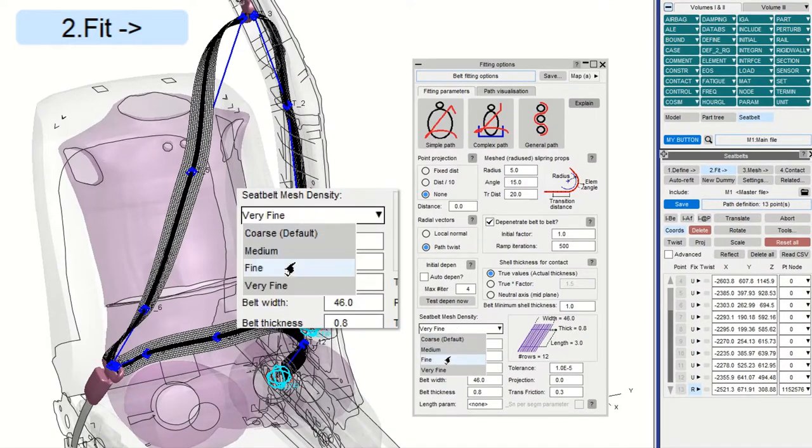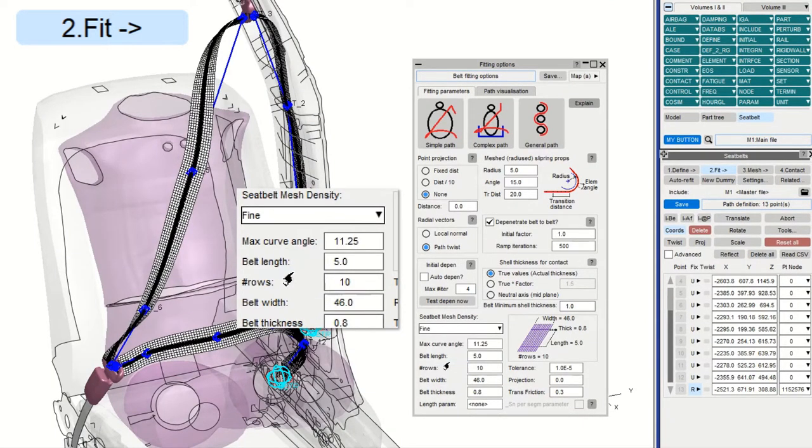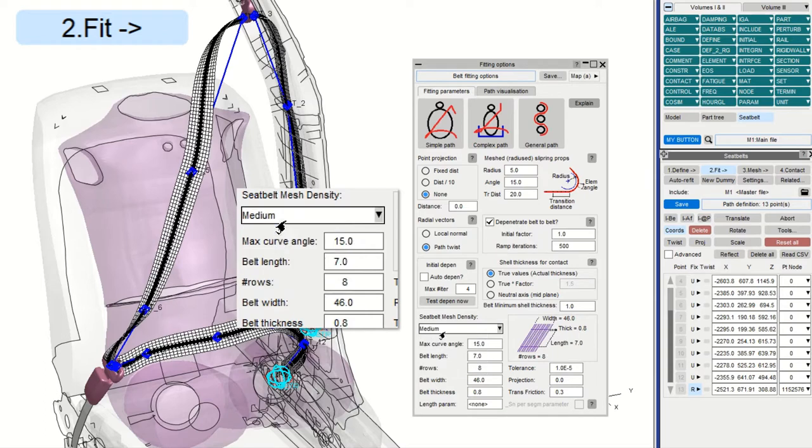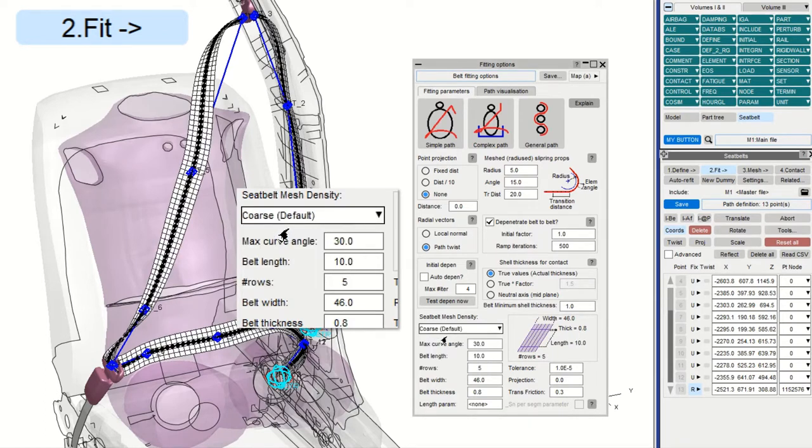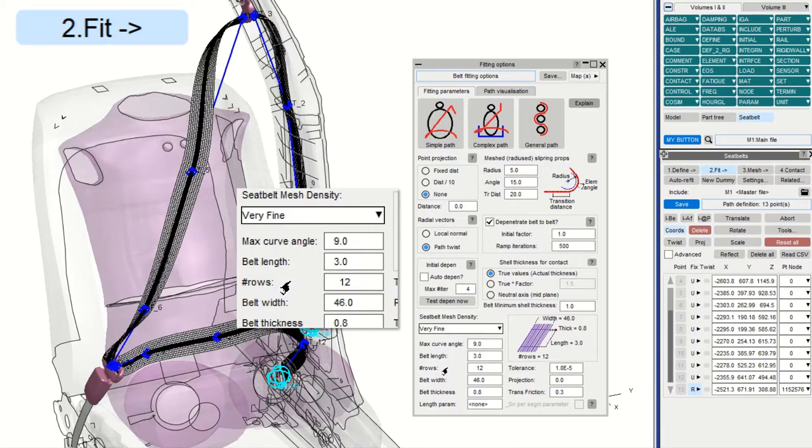On the Fitting Options panel, you'll now see a Seatbelt Mesh Density drop-down, from which we can select different preset mesh sizes. Element length and number of rows are still fully customizable on the panel below. The Very Fine setting gives a 3mm mesh length and works well for detailed applications.